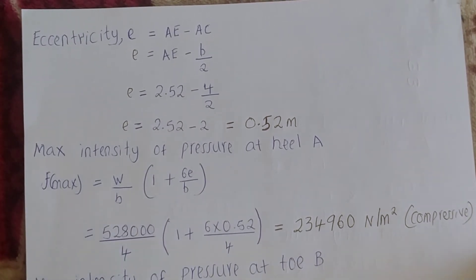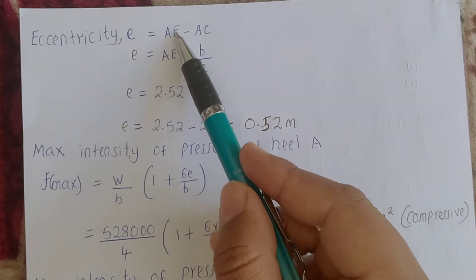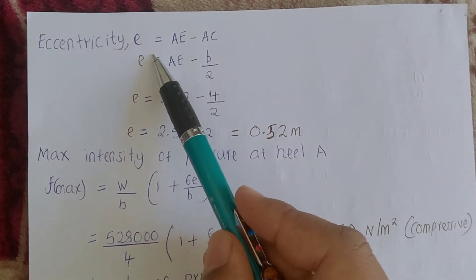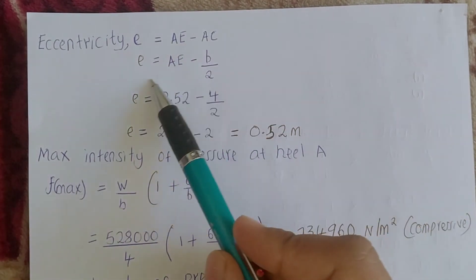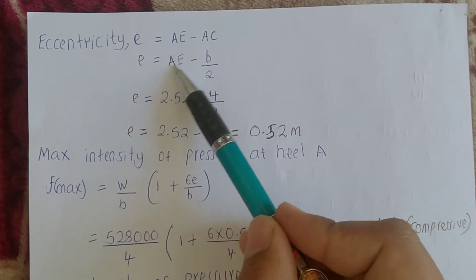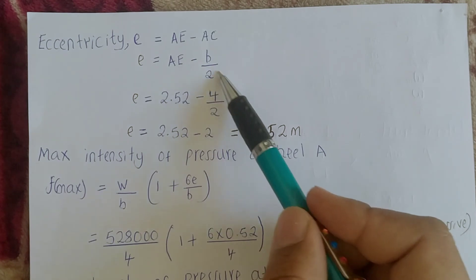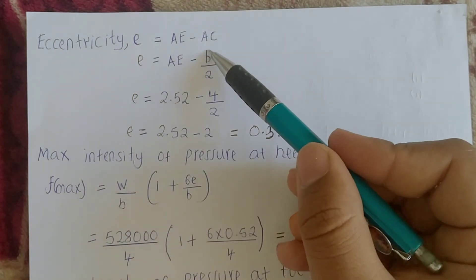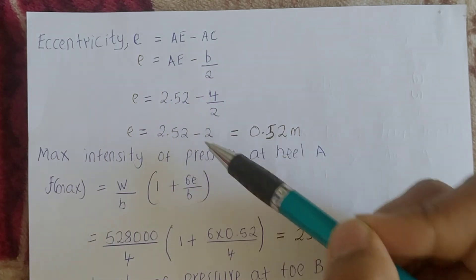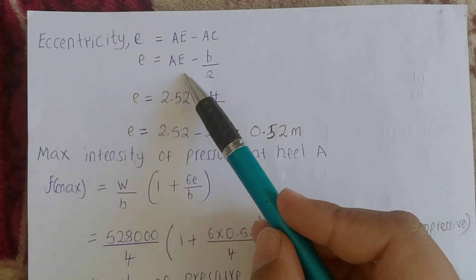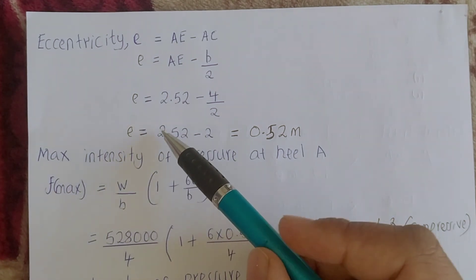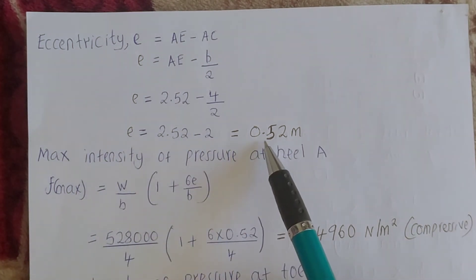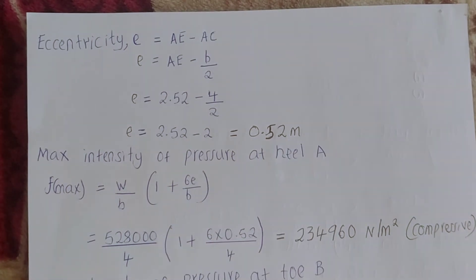Now we shall find the eccentricity. Eccentricity e equals AE minus AC, where AC = b / 2. So e = 2.52 − 4/2 = 2.52 − 2.00 = 0.52 meters. That is the eccentricity.